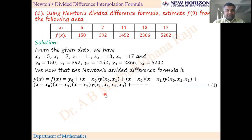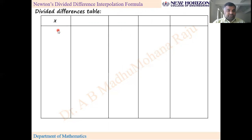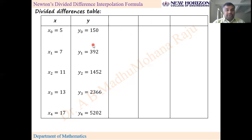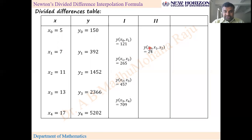We know Newton's divided difference formula — take it as equation 1. The divided differences are obtained from the following table: x values x₀ through x₄, y values y₀ through y₄. First order divided differences: numerator is the difference of consecutive y values and denominator is the difference of consecutive x values — for example, (y₁ − y₀)/(x₁ − x₀). Second order differences: numerators are first order differences; denominators are the extreme-end x values — x₀ and x₂, x₁ and x₃, x₂ and x₄.